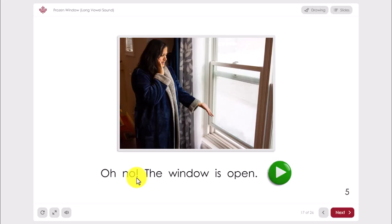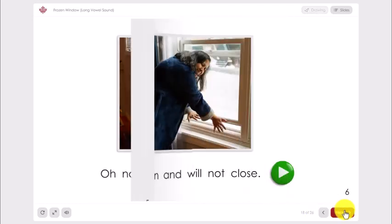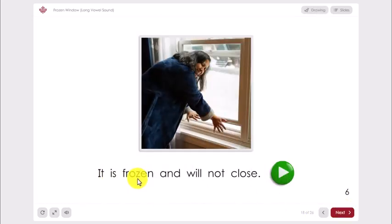Finally, when students have re-read the story several times, you can read it to them with errors to check for understanding and encourage active listening skills. For example, it is frozen and will not shut. Is that right? Oh, will not close. How do you know? Oh, the letters are C-L-O-S-E. Shut means the same thing, but this word in the book is close.